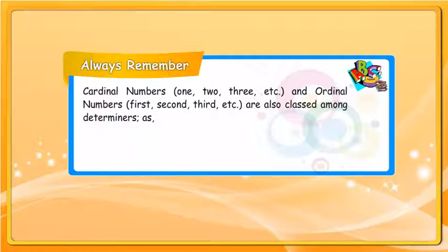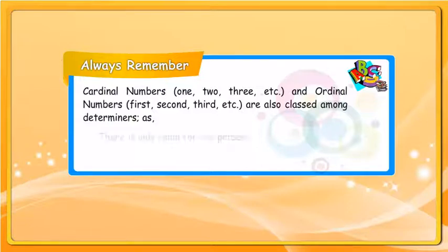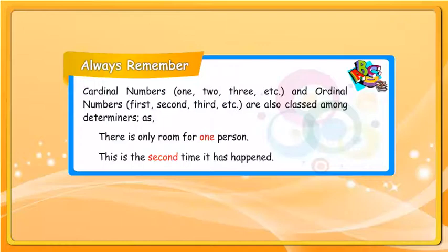Cardinal numbers 1, 2, 3, etc. and ordinal numbers first, second, third, etc. are also classed among determiners. Examples: There is only room for one person. This is the second time it has happened. This is the third time it has been caused in a sentence.